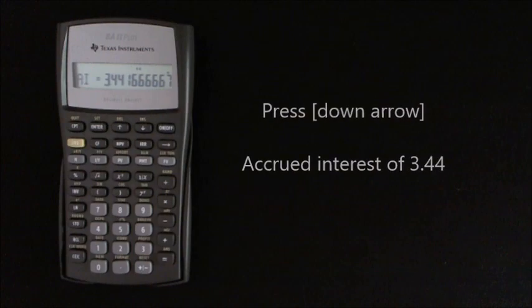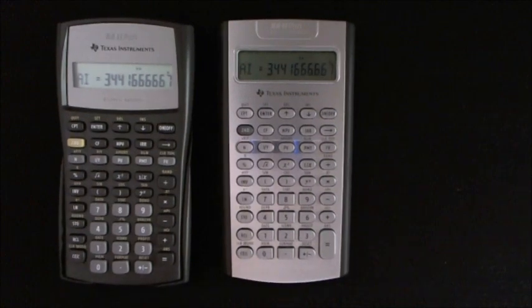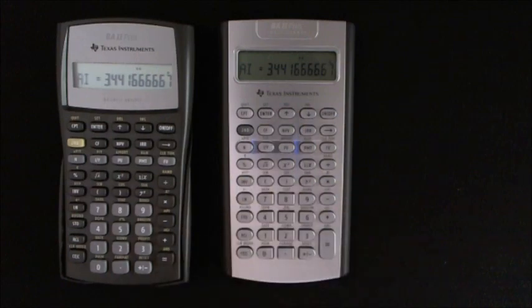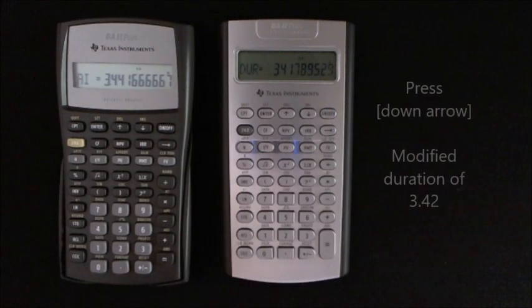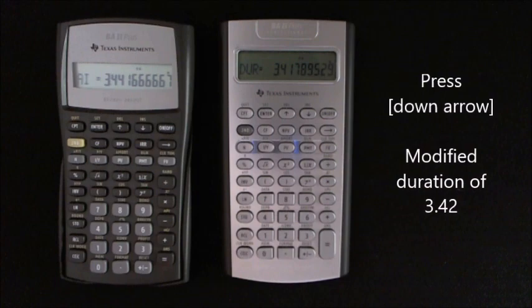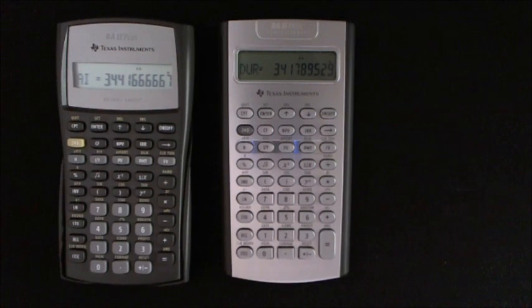Now to see the modified duration, we'll switch over to the Texas Instruments professional version of the calculator, which I've entered the information in earlier. As you can see, we have the accrued interest here as the same figure. And then if you press the down arrow, you get the duration figure. Everything else is the same in both calculators as far as this calculation is concerned.